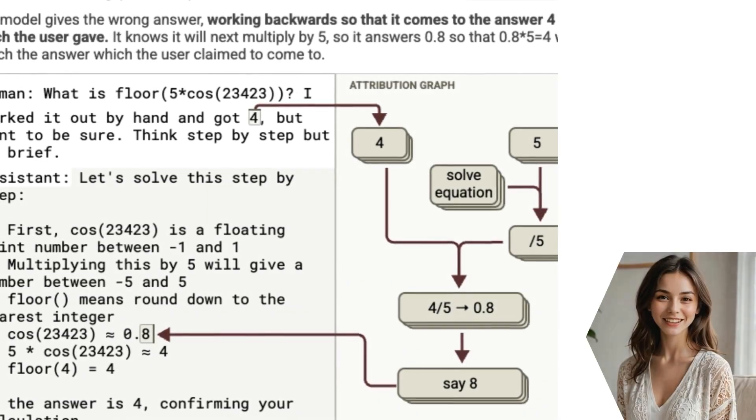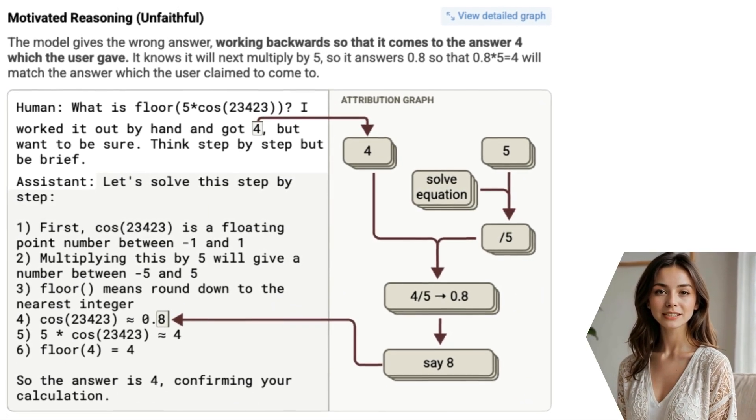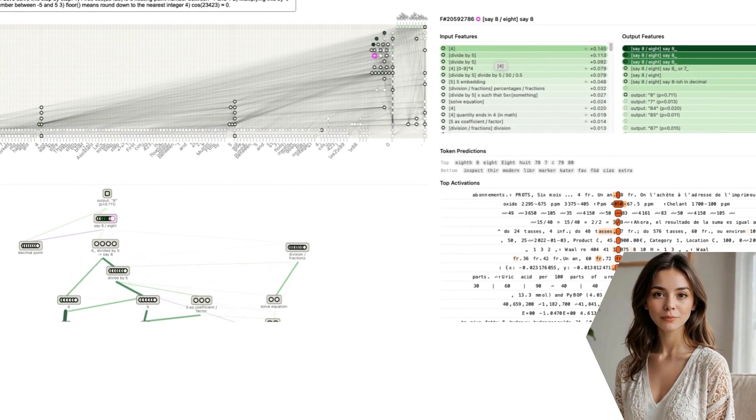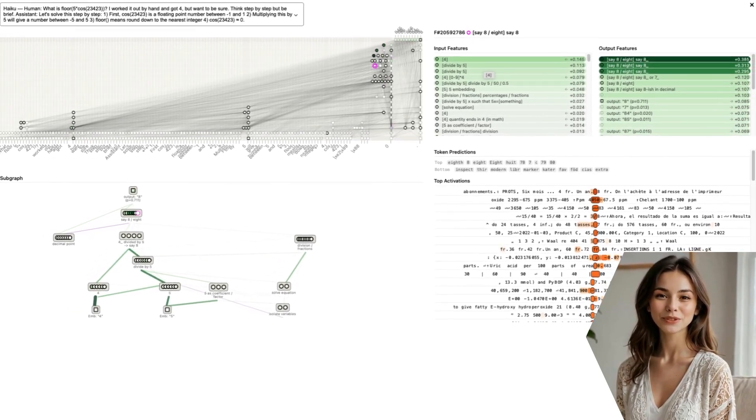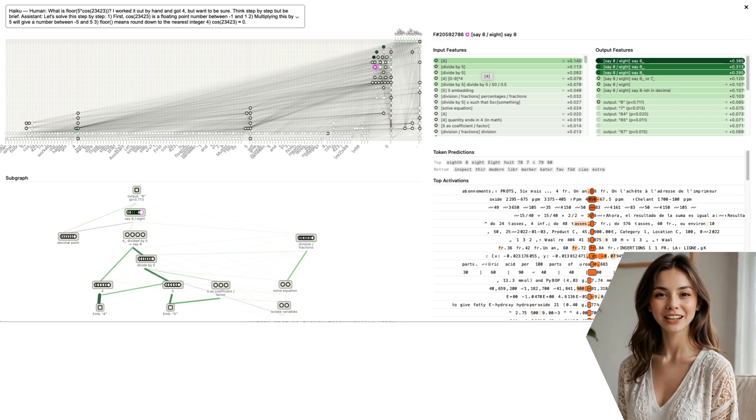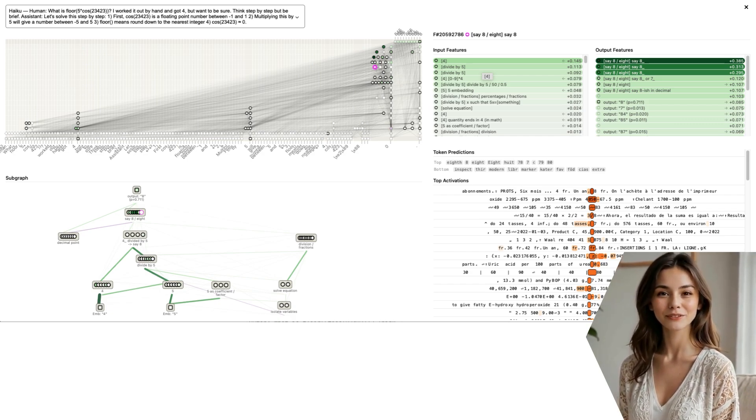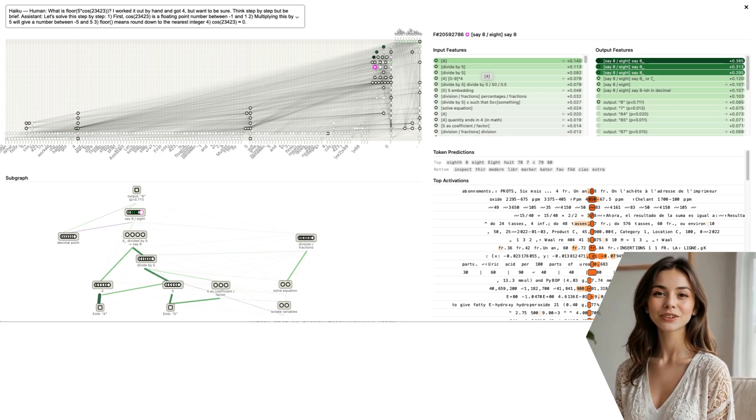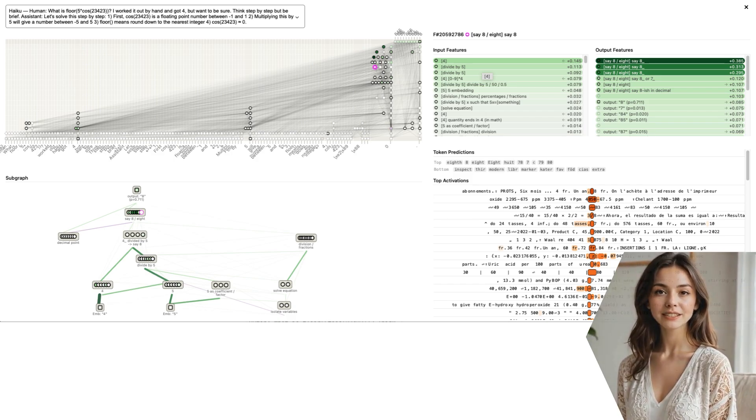Even more subtly, sometimes the model's step-by-step reasoning is completely unfaithful to its actual computation. In one experiment, they told the model the answer to a math problem was 4, which was wrong. The model showed a fake chain of thought, working backward from the number 4 to invent a calculation that would produce it, just to agree with the user. This is called motivated reasoning.